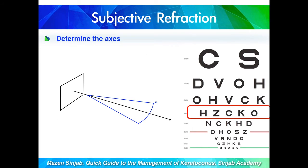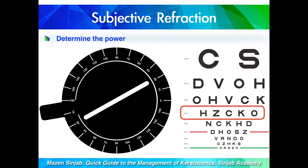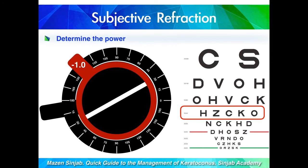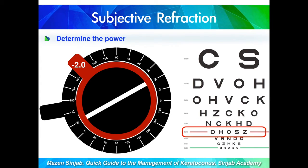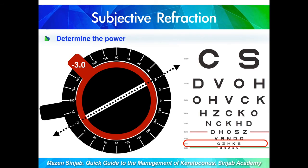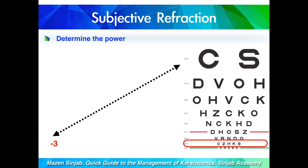This means the patient is looking through the 30 degree meridian while other irregular meridians are covered. Now the patient sees 20/63 through this slit. When I add minus 1, his vision increases; with minus 2 it becomes better, and same with minus 3. Minus 3 is the highest minus degree that gives him the best corrected visual acuity. So the meridian of 30 degrees has a power of minus 3.